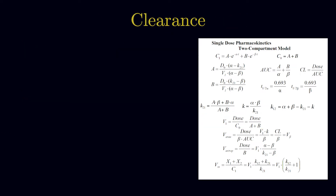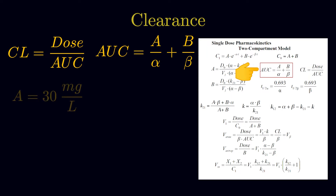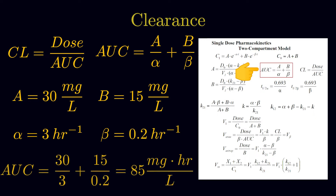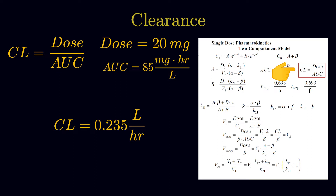The next question is asking for the clearance. We know that clearance is equal to dose over AUC, and with the two-compartment model, AUC is equal to A over alpha plus B over beta. So AUC equals 30 over 3 plus 15 over 0.2, which equals 85. Then clearance equals 20 mg divided by 85, giving us 0.235 liters per hour.